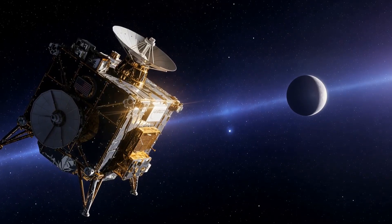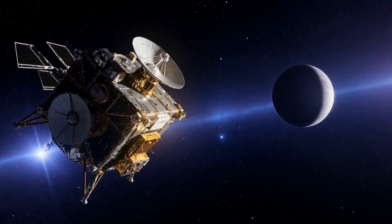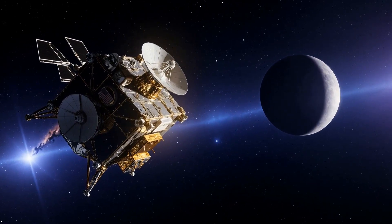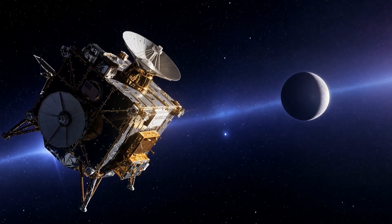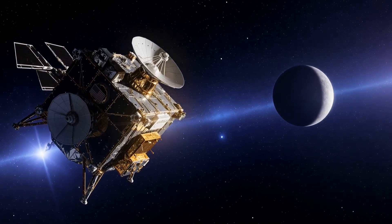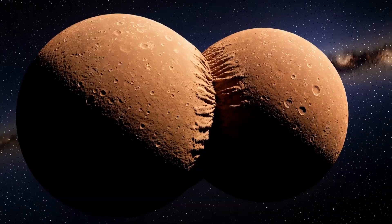For years, we explored this region with our telescopes, cataloguing its inhabitants. We sent the New Horizons probe on a historic flyby of Pluto and then aimed it deeper toward a strange snowman-shaped object named Arrokoth. It gave us our first up-close look at one of these primordial bodies.